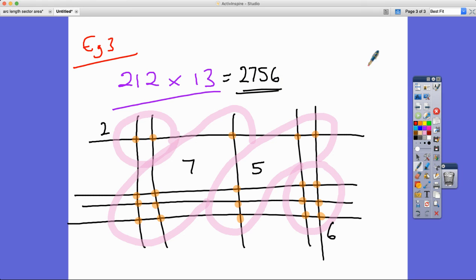Let's check it out. 212 multiplied by 13. Does it work? 2 times 3 is 6, 1 times 3 is 3, 2 times 3 is 6. Put the 0 in for the tens column. 2 times 1 is 2, 1 times 1 is 1, 2 times 1 is 2. Add it up and fingers crossed... it does make the same answer!